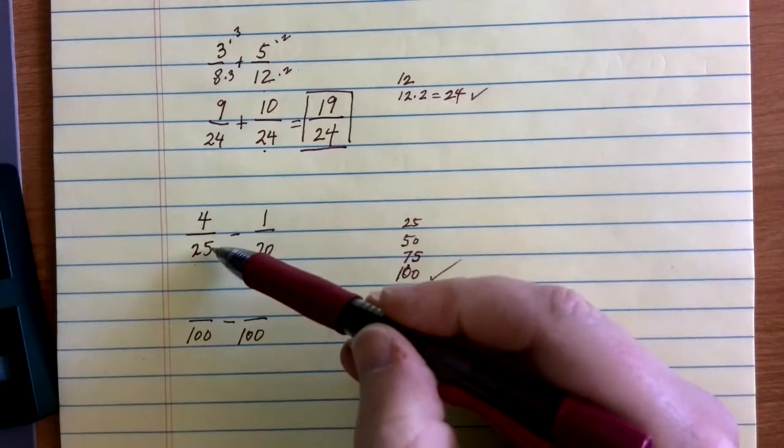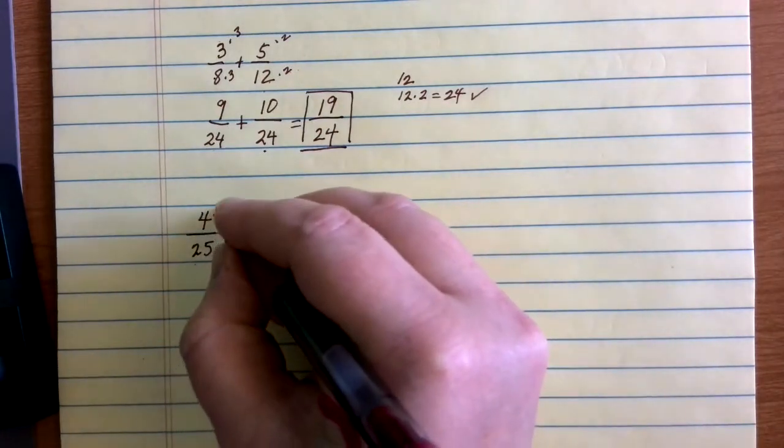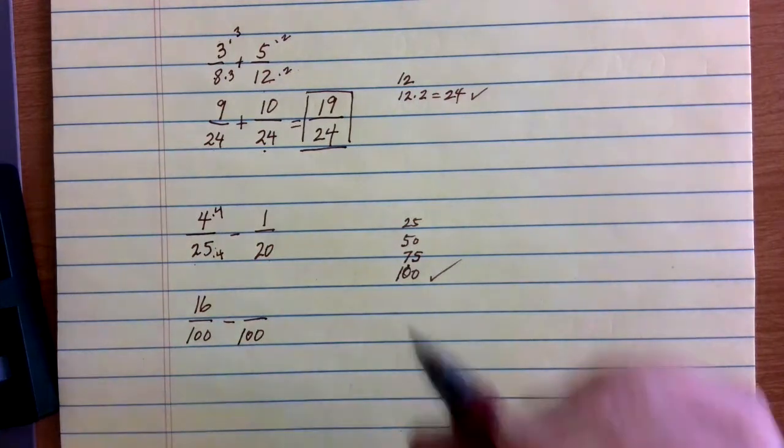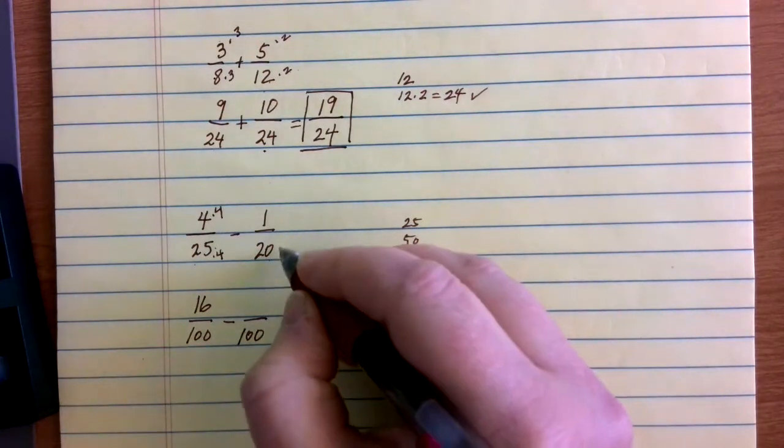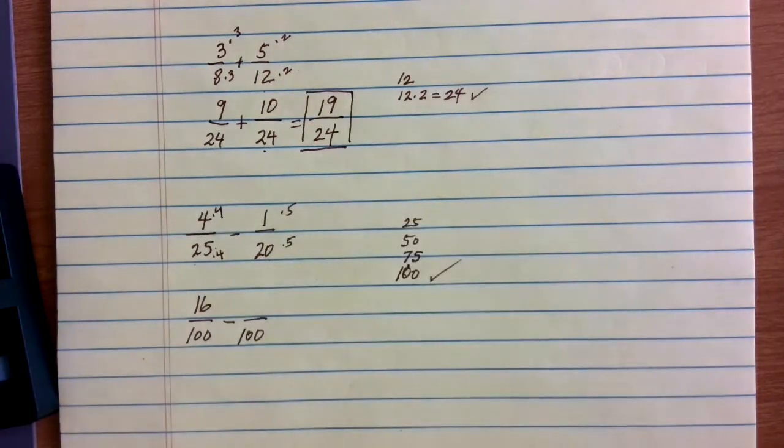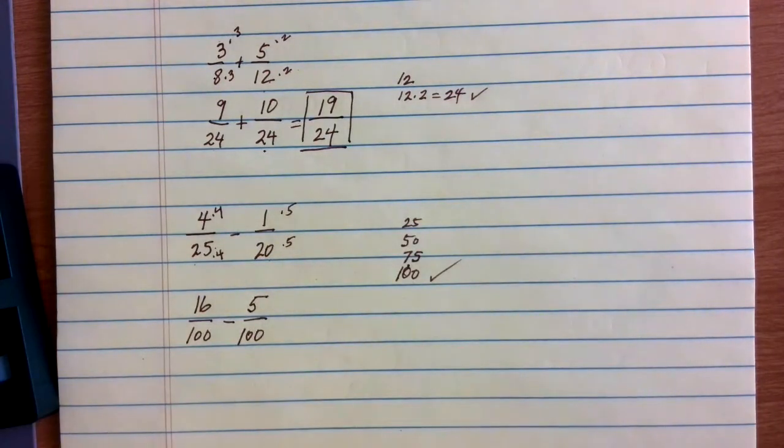For the first fraction, I had 25. To get to 100, I would have had to multiply by 4, so I need to multiply my numerator by 4 as well. 4 times 4 gives me 16 as my new equivalent numerator. For the next one, I have 20. I would have had to multiply by 5 to get to 100, so I also multiply the top by 5. 1 times 5 is still 5. So I have 16/100 minus 5/100.